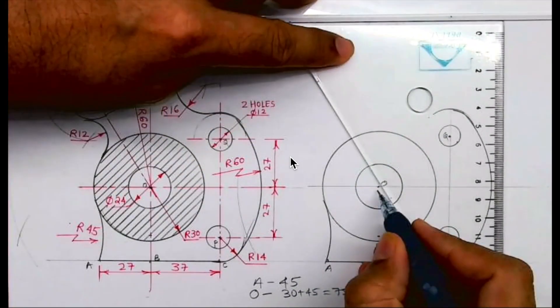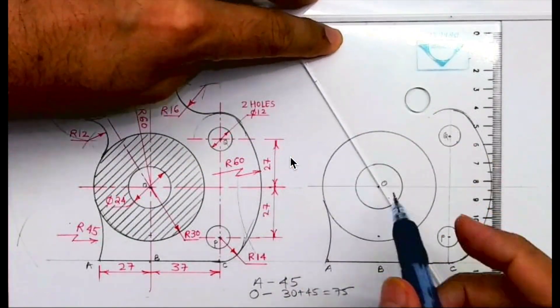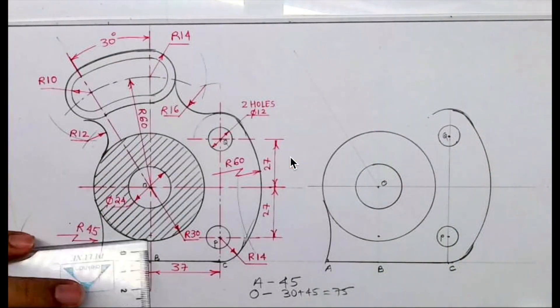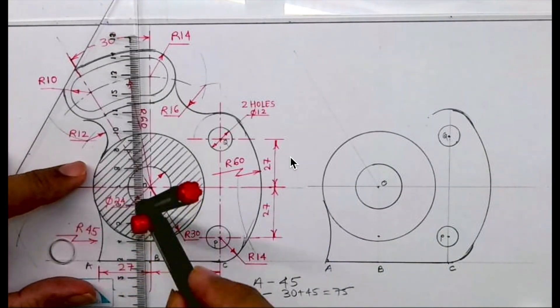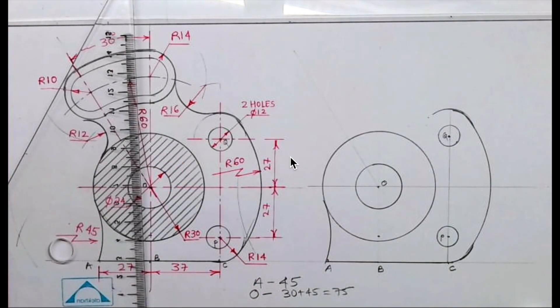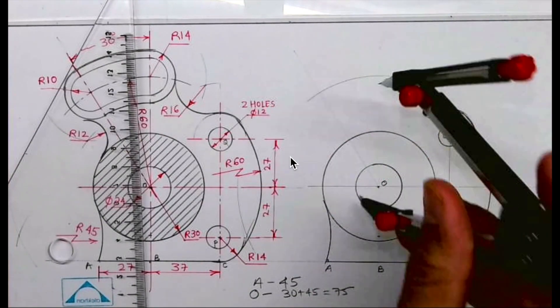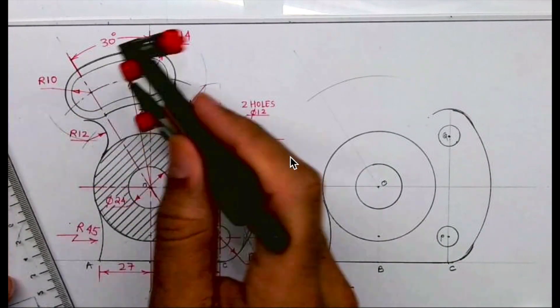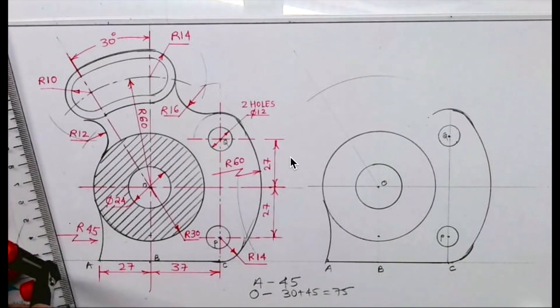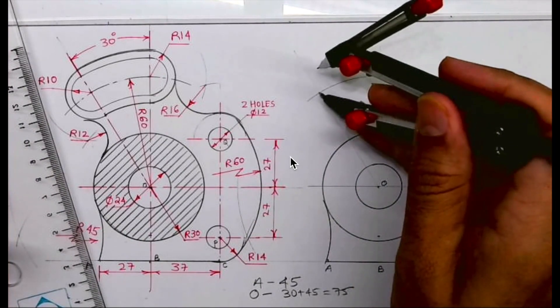Now we draw 30 degrees and draw a vertical line. We take 60 and from O cut 60. Wherever that cuts the vertical and inclined line, from there we can draw radius 14 and radius 10.